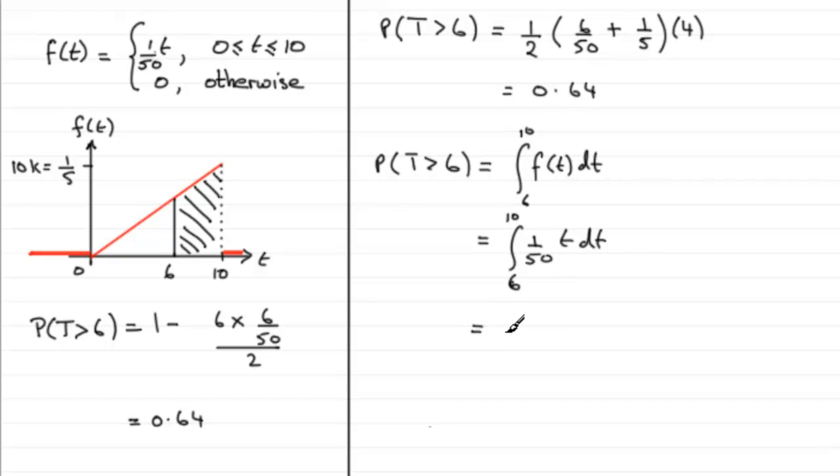If we do this, we have 1/50 multiplied by t²/2, which is t²/100, between the limits of 6 and 10. So we've got 1/100 times (10² minus 6²), which is 100 minus 36, equals 64. 64/100 is 0.64.